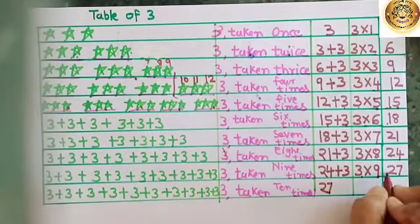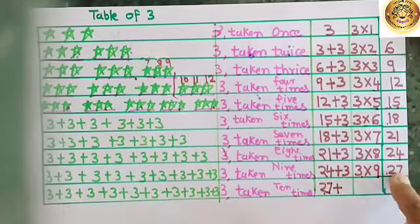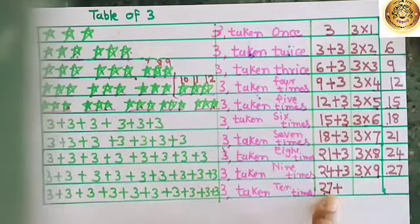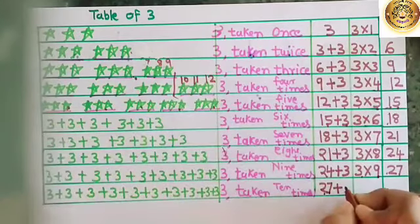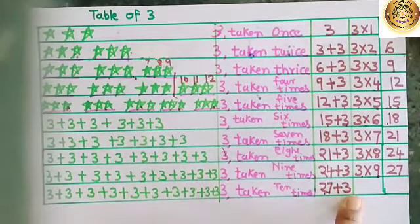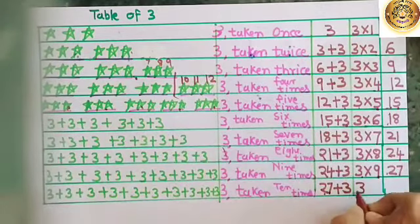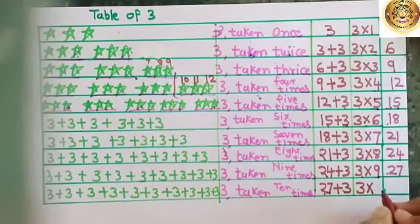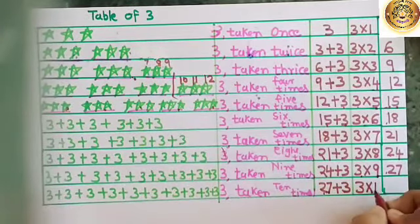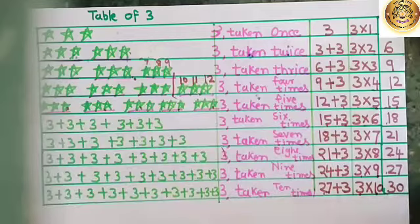Now, I take 27, the last sum of the table, and add 3 one more time. How many times have we added 3? 3 ten times. That means 3 10s are 30.